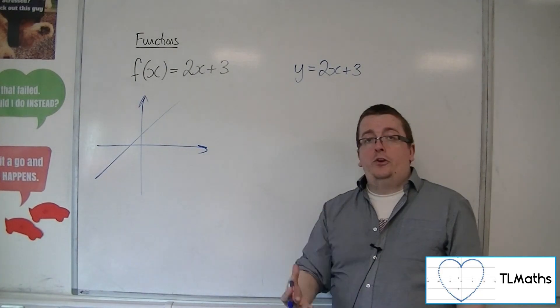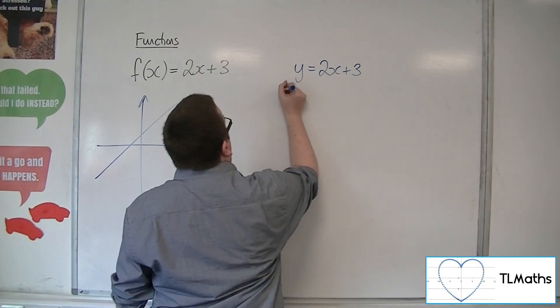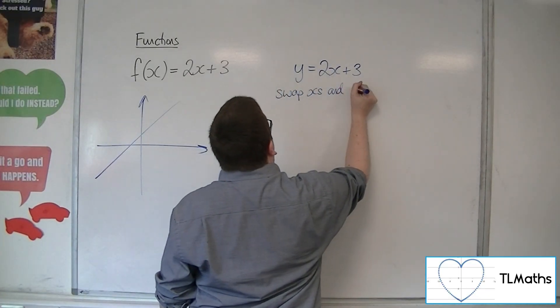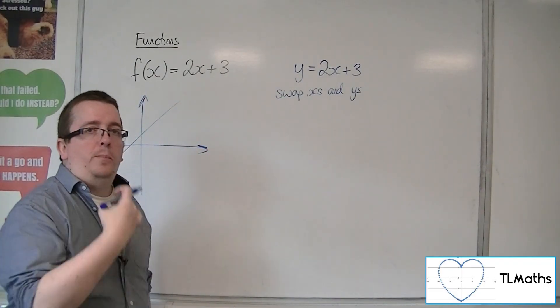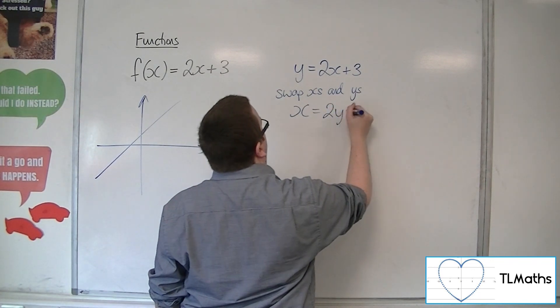Step 2 is to swap the x's and y's. So any x's that turn up become y's, any y's become x's. So we would have x equals 2y plus 3.